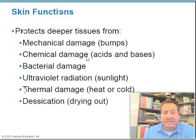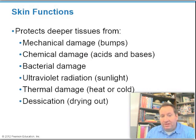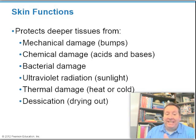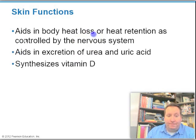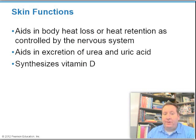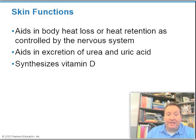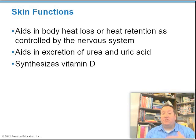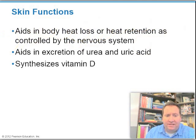Major functions of the integumentary system include protecting you from mechanical damage, chemical damage, bacterial damage, UV light damage, heat damage, and drying out. It also aids the body in heat loss or heat retention controlled by the nervous system, aids in excretion of urea and uric acid through sweating, and aids in the development of vitamin D.